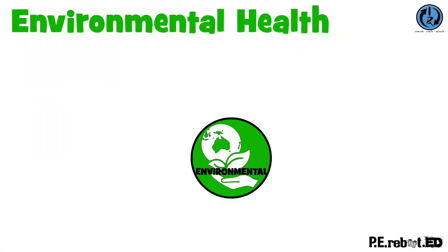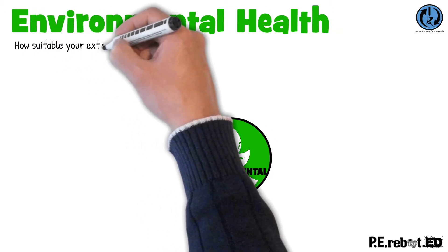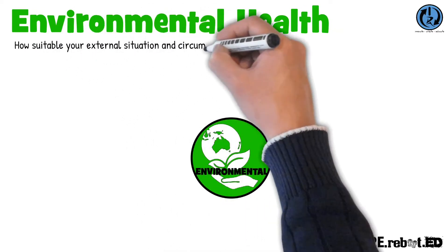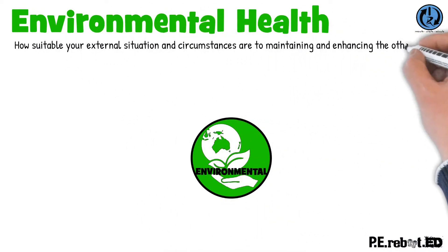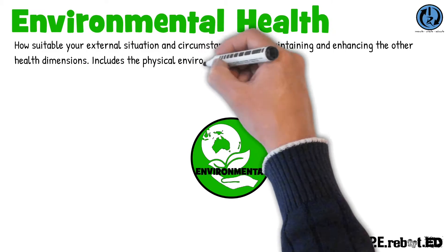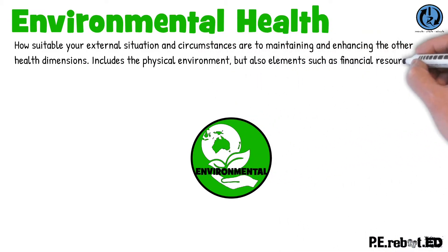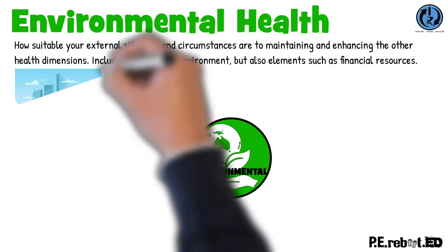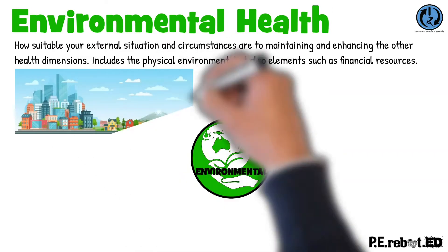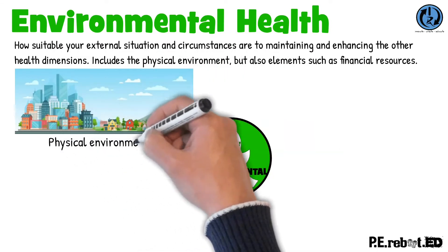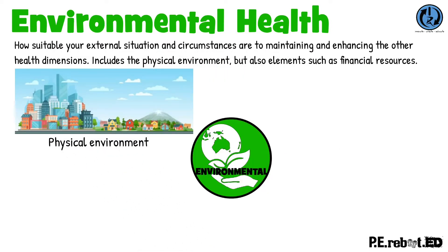The environmental health dimension includes factors that affect health as a result of the external situation and circumstances in which the individual finds themselves. This dimension incorporates a range of factors including the physical environment of the individual. Do they live in a rural or suburban area with available green space or natural areas free from pollution? Or are they residing in high-density housing in an urban location?